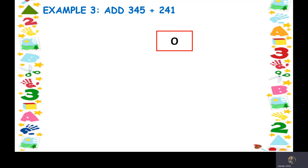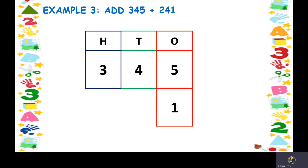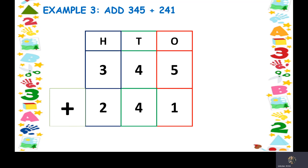Here is example number 3: add 345 and 241. Write the place value starting from ones, tens, and hundreds. Then write the numbers — 5, 4, and 3 for 345. Then write the next number — 1, 4, and 2 for 241. Now we are going to add the numbers starting from the ones place. We have 5 and 1 in the ones place. Keep 5 in your mind, take out 1 finger — so you get 6.